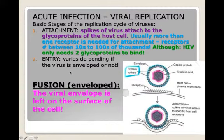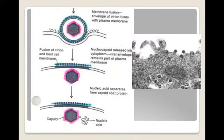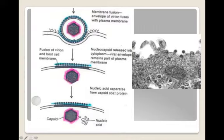That leads us to step two: entry, which varies depending on whether the virus is enveloped or not. The first method is fusion, used by enveloped viruses. The viral envelope is literally left on the surface of the cell. After attachment, membrane fusion occurs — the host cell membrane engulfs the virus, then rather than fully engulfing it, the viral envelope becomes continuous with the host cell membrane, releasing the naked nucleocapsid to the inside of the cell.